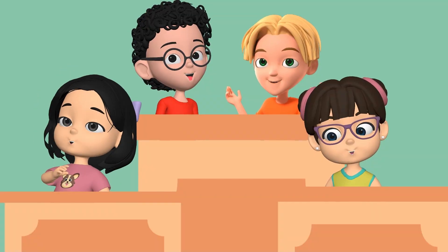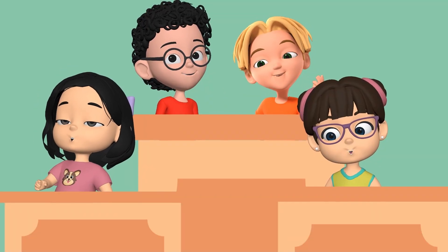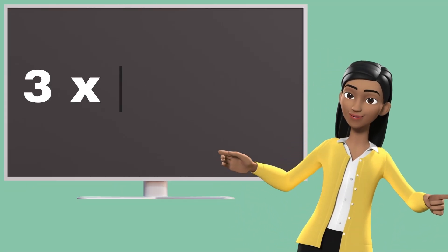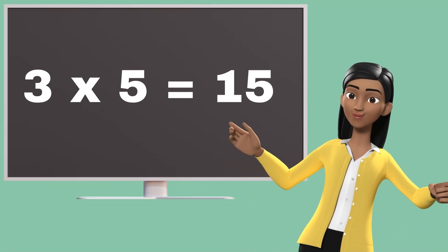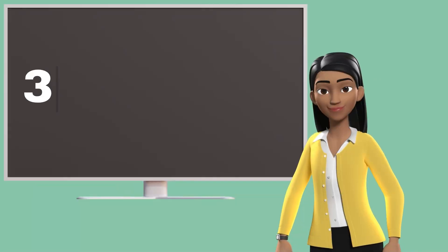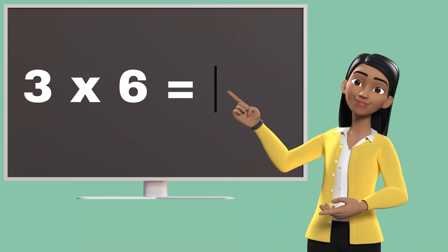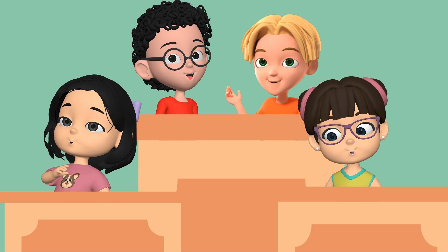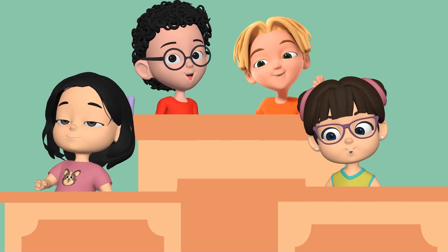Three fours are twelve. Three fives are fifteen. Three fives are fifteen. Three sixes are eighteen. Three sixes are eighteen.